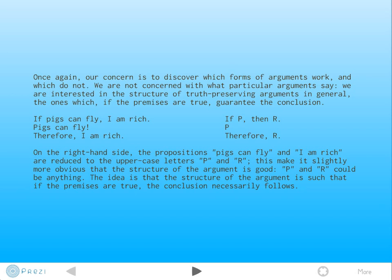But P and R could be anything. The idea is that the structure of the argument is such that if the premises are true, the conclusion necessarily follows. This is the kind of thing we're going to be doing. On the right-hand side, you have this English thing, and on the left-hand side, we're going to be reducing them to these placeholders, sentence letters P and R, which represent propositions, with if-then representing the logical connection between these propositions. But I'm jumping ahead of myself. That's actually for the next video.